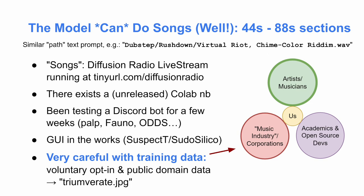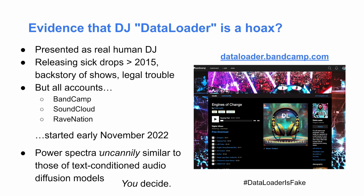We're trying to be very careful for various stakeholders. We've been testing a Discord bot for a few weeks — a lot of work by Palp, Fauna, Odds, and other folks. There's a GUI in the works for what's otherwise a command-line utility. We've been very careful with the training data: this has all been opt-in plus some public domain material — we haven't just scraped whatever. I also want to direct attention to what seems to be a text-conditioned diffusion model with accounts dating back to 2015, but actually seeming rather recent. Looking at the power spectrum, it's really similar to what we get from text-conditioned audio diffusion models, so it's possible that this DJ may not be a real person.